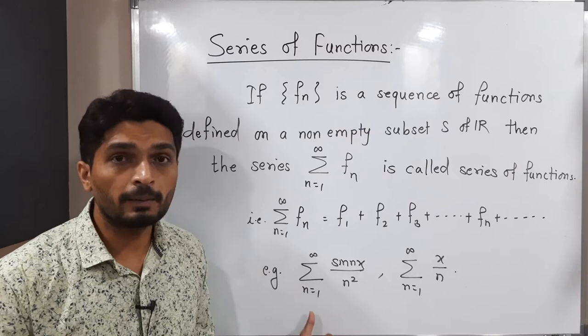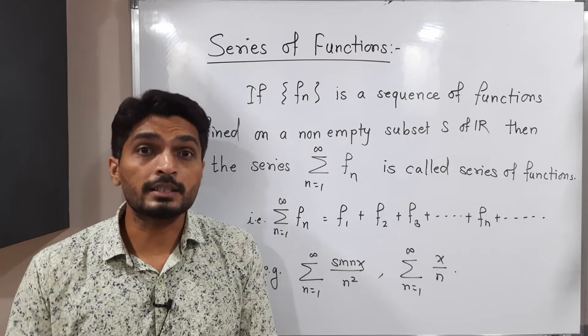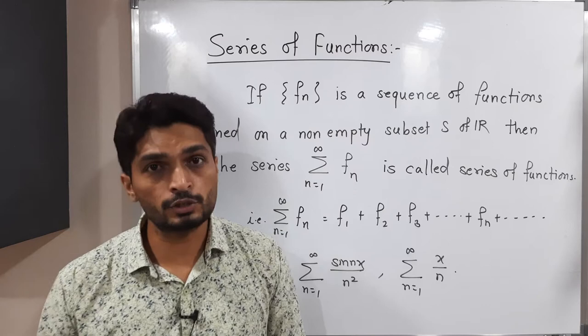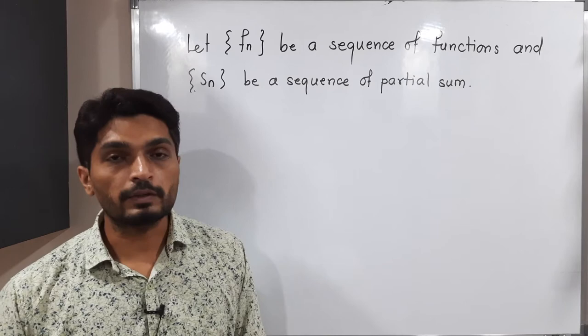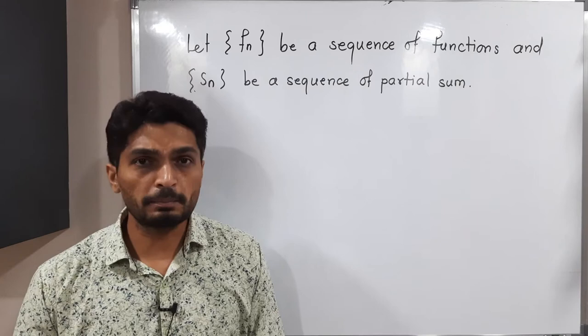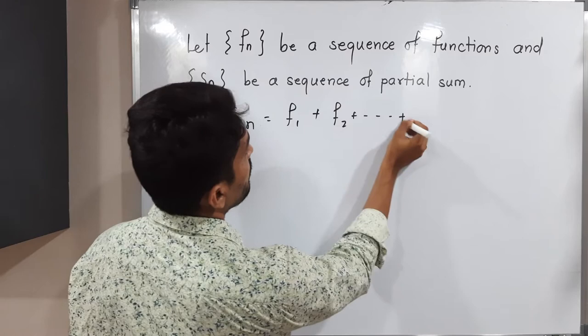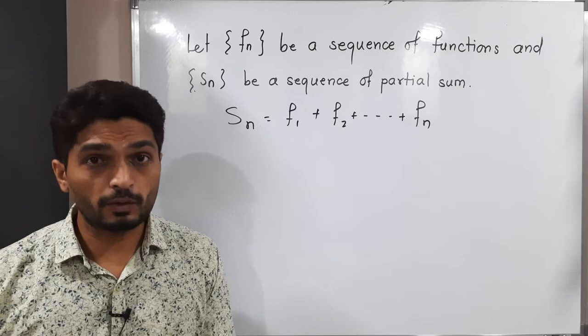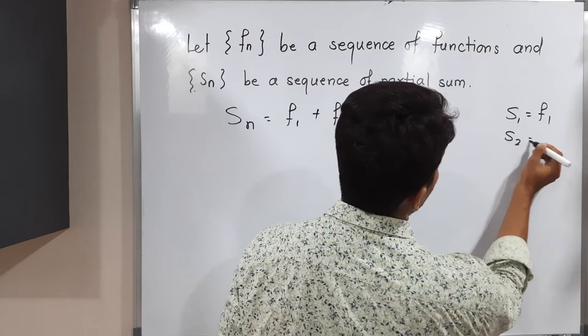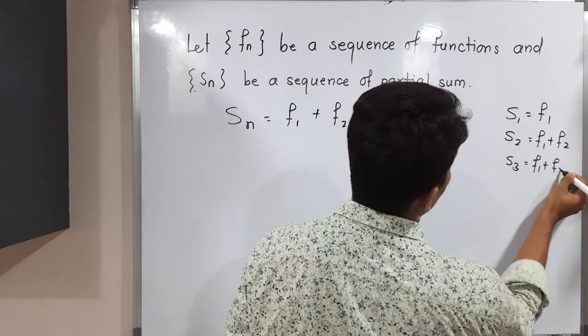Let us see when we say a series of functions is convergent and when it is divergent. Consider fn to be a sequence of functions and sn to be the sequence of its partial sums. That means sn is the sum of the first n functions: f1 + f2 + ... + fn. In particular, s1 = f1, s2 = f1 + f2, s3 = f1 + f2 + f3, and so on.